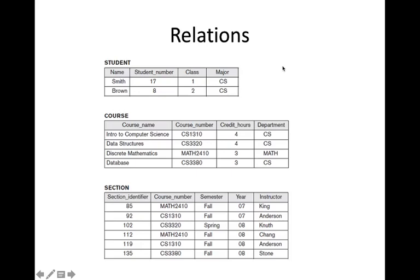Relations — tables such as Student, Course, and Section are all considered to be relations. Instead of saying 'table,' formally it is called a relation. So all these tables are known as relations in the relational data model.